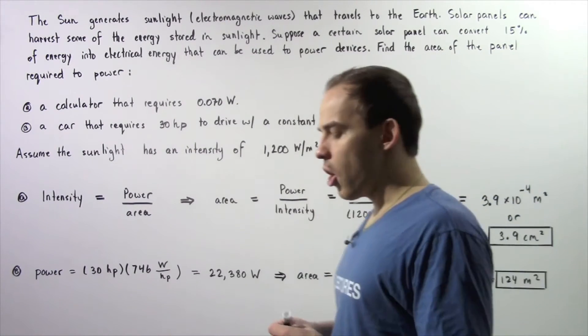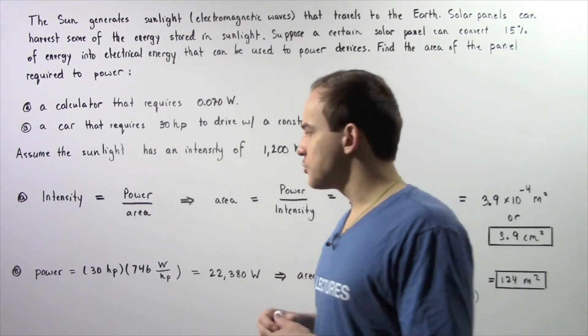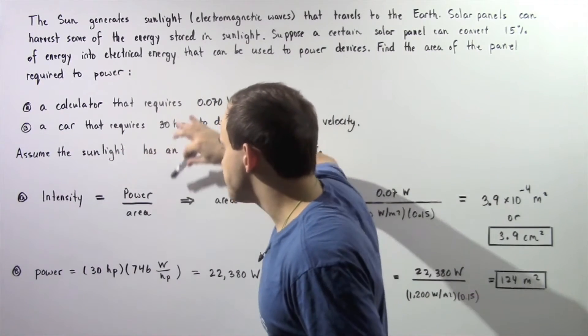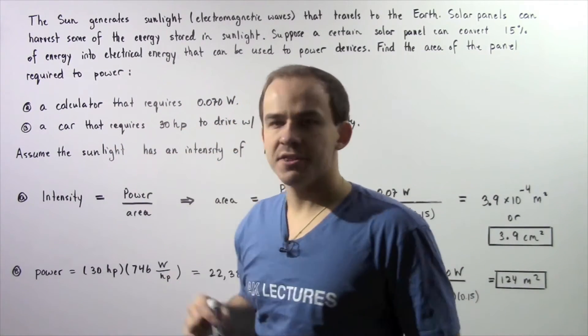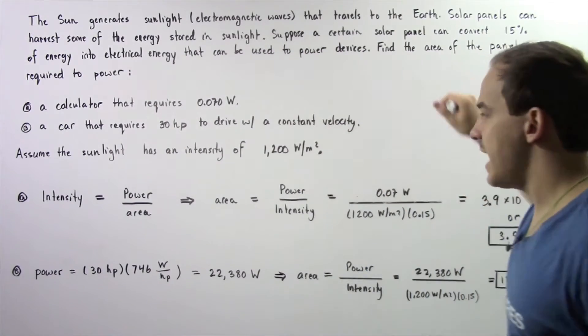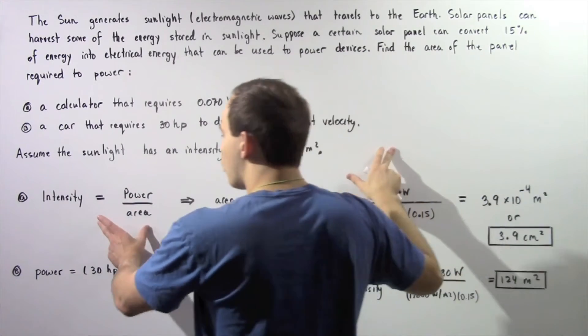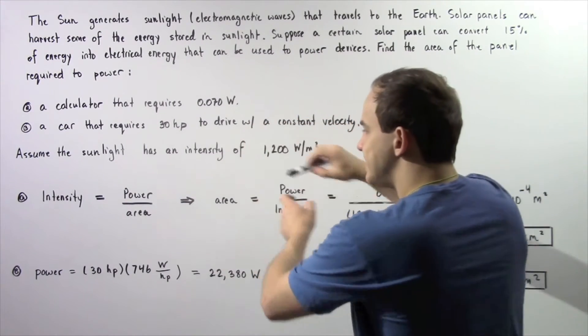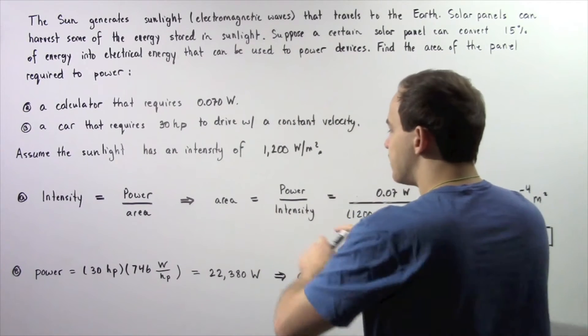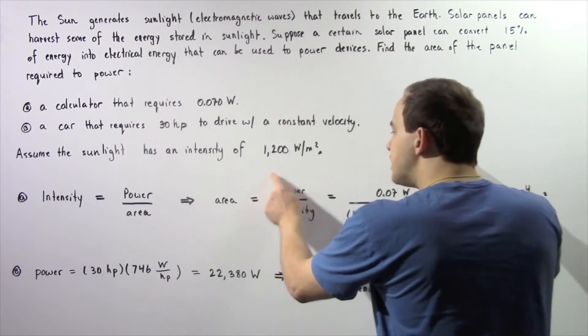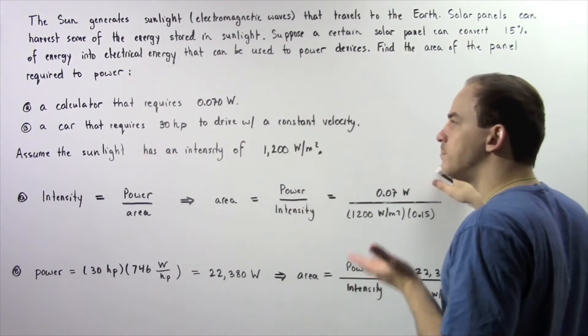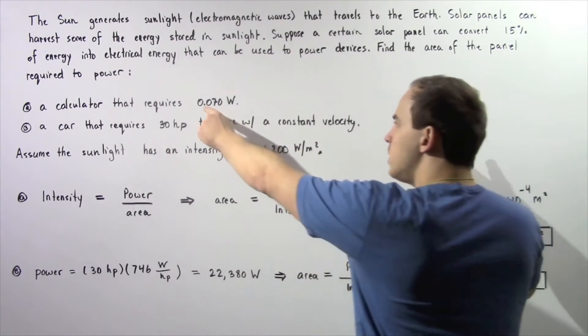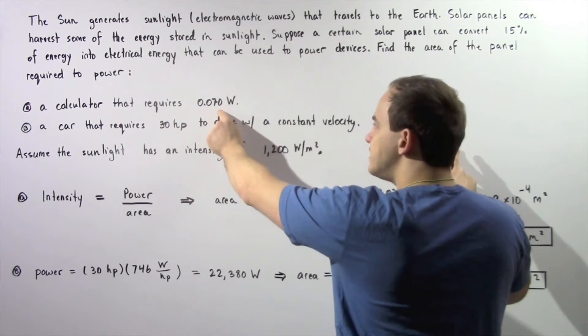Let's begin with part A. In the previous lecture we said that the intensity is equal to the average power divided by the area. Since we're looking for the area, let's take this equation, rearrange it, and solve for the area. The area is equal to the power divided by the intensity. This power is the power required by our device, by the calculator, and this is equal to 0.070 watts.